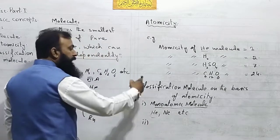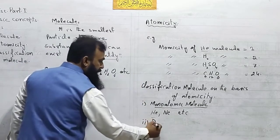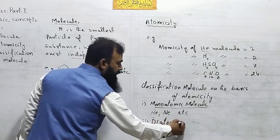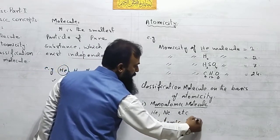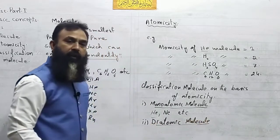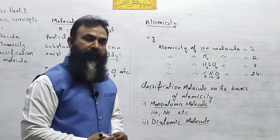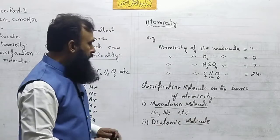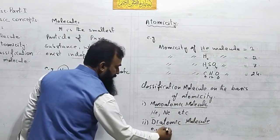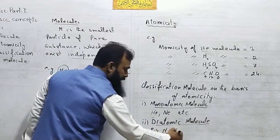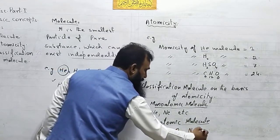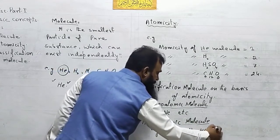The second type is the diatomic molecule. As the name suggests, a diatomic molecule consists of two atoms. For example: hydrogen (H₂), oxygen (O₂), nitrogen (N₂), HCl, etc.